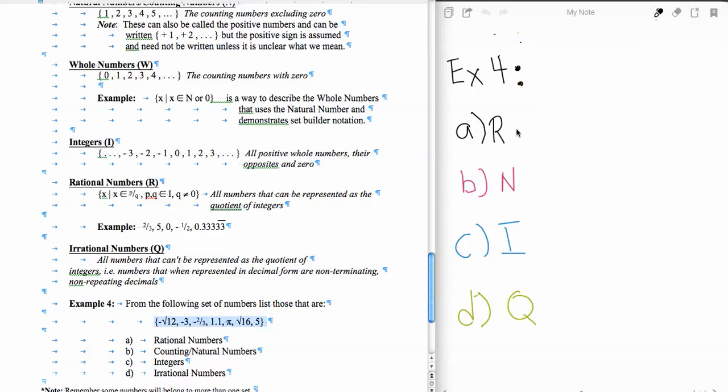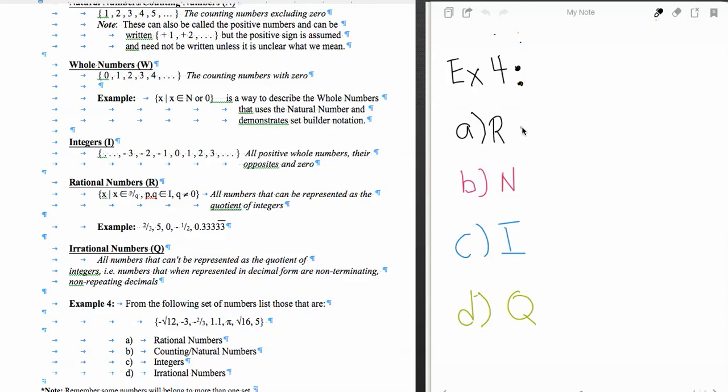The next one is negative 3. Yes, I can describe negative 3 with a quotient, so negative 3 is a rational number. I can describe it as negative 3 divided by 1, or negative 6 divided by positive 2. The next one is negative 2 thirds. Yes, that is a quotient of two integers, so negative 2 thirds is a rational number.